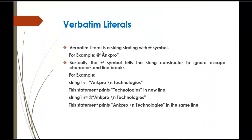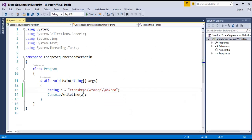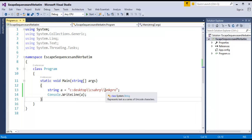Now, verbatim literals. A verbatim literal is a string starting with the @ symbol — for example, @"Ancro". Basically, the @ symbol tells the string constructor to ignore the escape characters and the line breaks. For the reader, using double backslashes does not make sense, so using verbatim literals we can make this more readable. I will remove the double backslash and replace it with a single backslash, and add @ at the starting of the string.